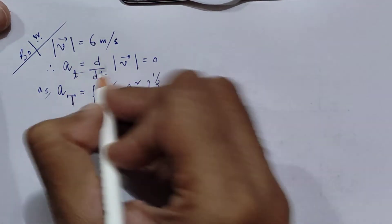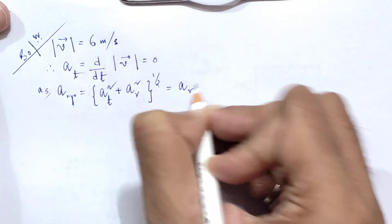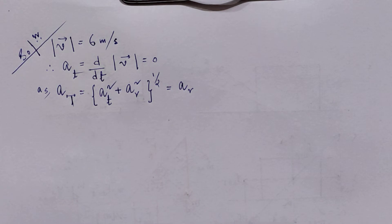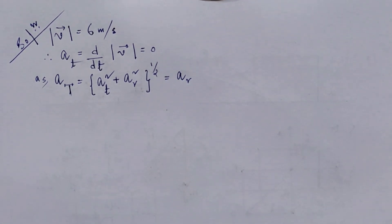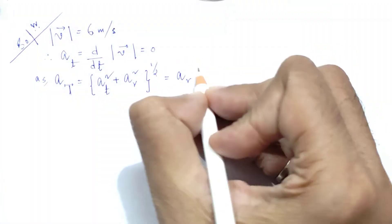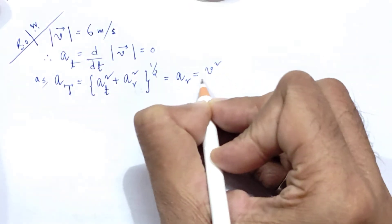Now, we always know that the total acceleration is tangential acceleration squared plus radial acceleration squared, whole to the power half. So here our tangential acceleration is 0, so we are only going to get the radial acceleration.